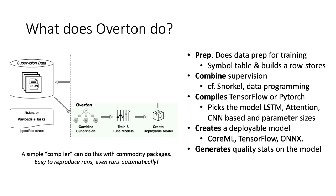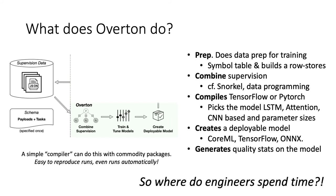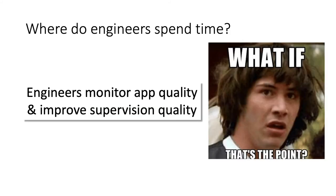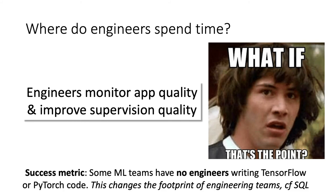More importantly for the developer, Overton generates a ton of statistical information which feeds its own downstream ecosystem of tools. So what does the engineer do when Overton handles all of this? They spend their time monitoring and improving supervision — adding new examples, figuring out how to supervise the system. They don't write new models. The success metric is that many teams now have no engineers writing any TensorFlow or PyTorch code. This changes the footprint of the engineering team, which to me was always the real value — analogous to SQL.